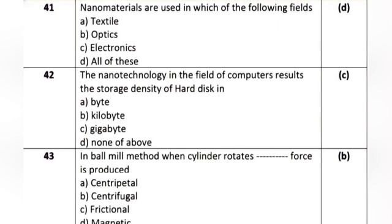Question 19: In the ball mill method, when the cylinder rotates, — force is produced. Option A: centripetal. Option B: centrifugal. Option C: frictional. Option D: magnetic. The correct answer is Option B: centrifugal.